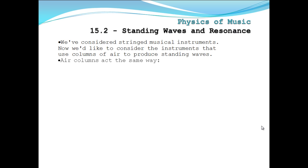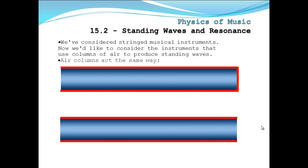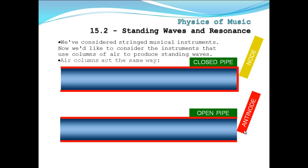Now, air columns act the same way. Columns of air, this one we call a closed end pipe because this end is closed. And this one we call open because both ends are open. So down here on the closed end pipe, we have a node at the closed end. As I said, that's a closed pipe. But down here on the open ended pipe is an anti-node. Open pipe.